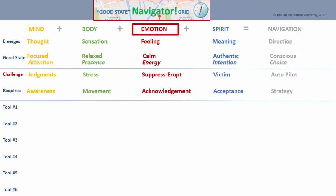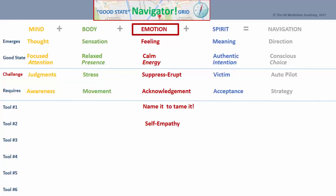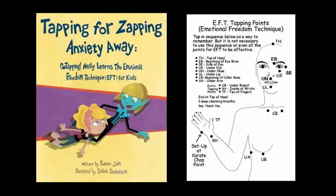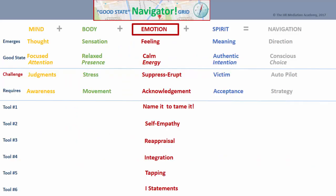When it comes to emotions, we start with self-acknowledgment of our feeling states — especially those that may challenge us — using the name-it-to-tame-it approach Dr. Rock advocates. We can also give ourselves self-empathy, reappraise our emotional response or intensity, and integrate and heal emotional charge from our traumatic pasts. One specific way is called tapping — also called the Emotional Freedom Technique — which blends traditional wisdom about meridian energy channels with modern psychology to offer amazing benefits. And whether or not one expresses oneself to the other, the benefit of contemplating an I-statement is invaluable. These are the summary of tools for emotions.